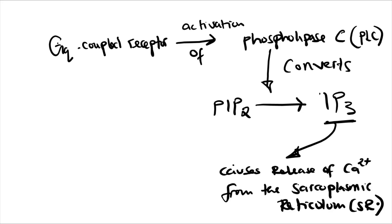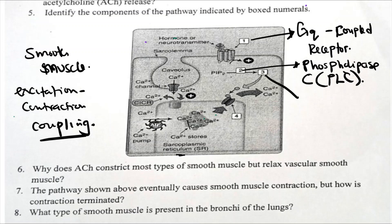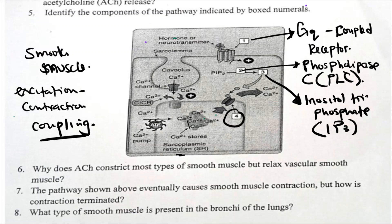From there, the excitation-contraction coupling proceeds as explained in our linked video. To answer the diagram: component one is a GQ-coupled receptor; component two is phospholipase C (PLC); component three is inositol triphosphate (IP3); and component four is an IP3-sensitive calcium receptor.